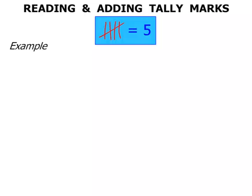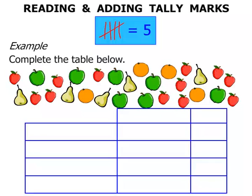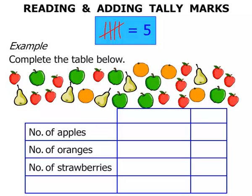Let's look at an example. We're asked to complete the table below. Lots of pieces of fruit there. The table has the number of apples, number of oranges, number of strawberries, and number of pears. We're going to have a tally column, and then finally a column that indicates the total.